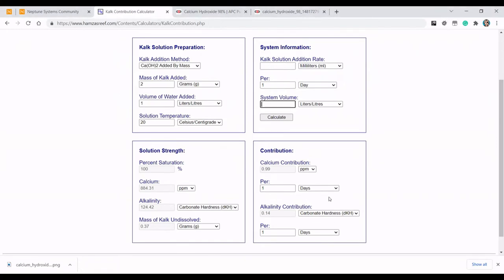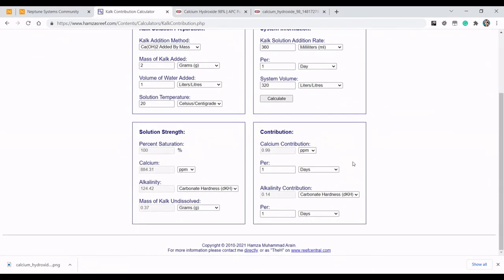On the second part, I've got a Red Sea Reefer 350 and I plan to add 15 ml of Kalkwasser per hour to the tank. If I work that out here, that will be 360 ml per day. The system volume, although it's 350, we'll say it's 320 to take into account rocks and sand. If I click Calculate, we can see that that's only going to be contributing 0.14 dKH of carbon hardness to my tank, which is nothing at all. Whereas, my tank actually takes 1.4 dKH per day.